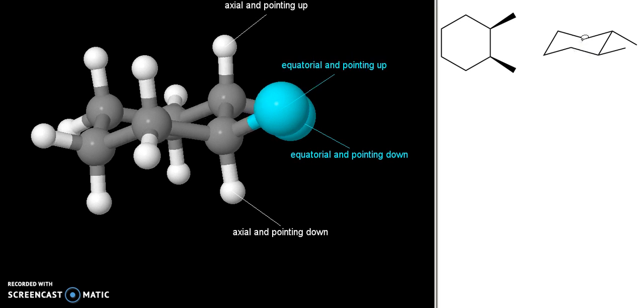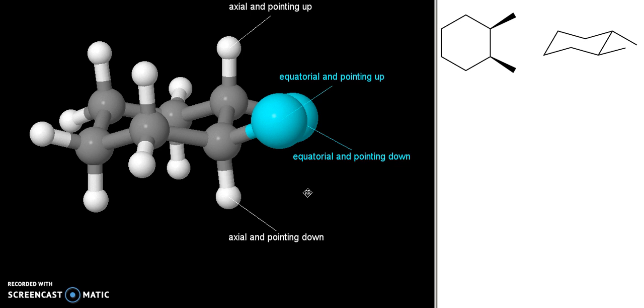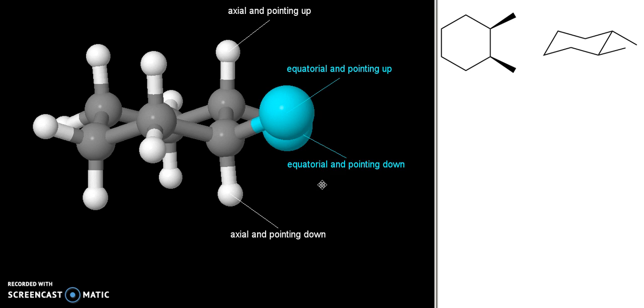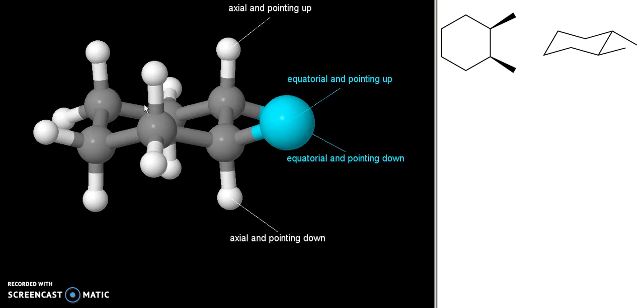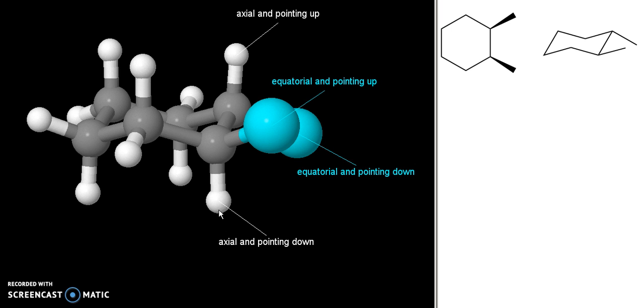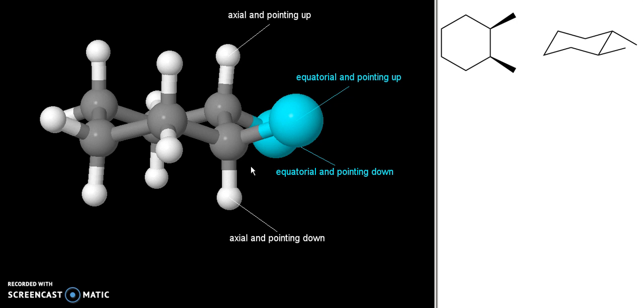I've drawn the version where both of my methyl groups are in the equatorial position. What I want you to notice is that on each of the carbons around the ring, one of the groups is going to be axial and one of the groups is going to be equatorial. Also, one group is going to be pointing up and one group is going to be pointing down.